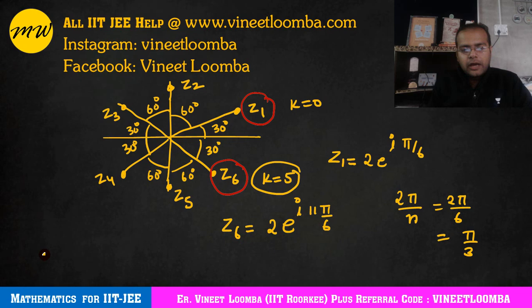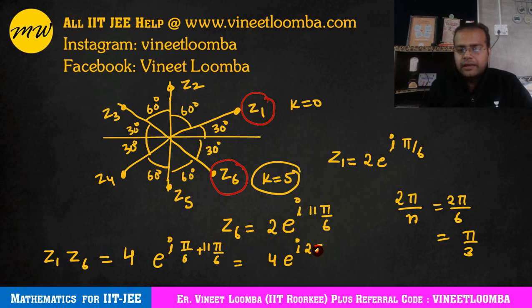So you have to find the product of these two, z1 into z6. That is 2 into 2, that will be 4, e to the power i. One is pi by 6, and one is 11 pi by 6, that will be nothing but 12 pi by 6, which will become e to the power i 2 pi. And i 2 pi, e to the power i 2 pi is cos 2 pi plus i sin 2 pi. That is going to be 1. So answer is going to be 4.